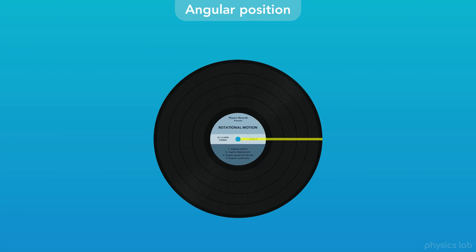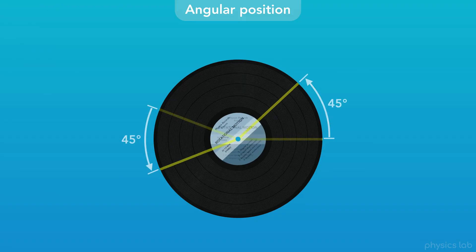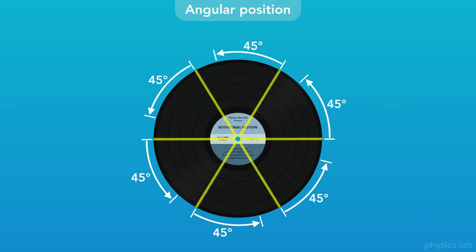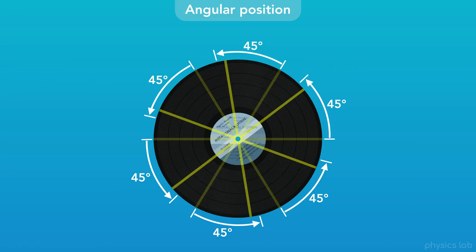When we added this line on the record, it didn't actually matter where we put it. If we add another line, we see that both lines rotate 45 degrees. In fact, any line on this record will rotate the same amount, because the entire object is rotating together.